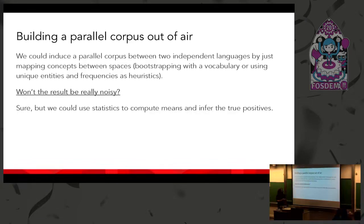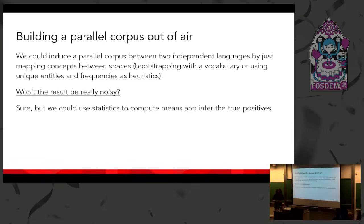A legitimate question: won't the result be really noisy with a lot of false positives? Yes, but we can use statistics to compute how many times 'house' seems to align with 'dog' versus 'casa', then infer the true positives and throw away the false positives.